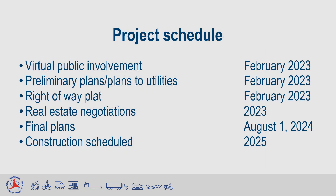The remaining project schedule is shown on this slide. The virtual public involvement period will remain open until March 10th. Preliminary plans will be sent to utilities in February to start designing any necessary utility relocations. The right-of-way plot will be completed in February and real estate negotiations will start this year. Final plans are due August 1st of 2024, and construction is currently scheduled for 2025.